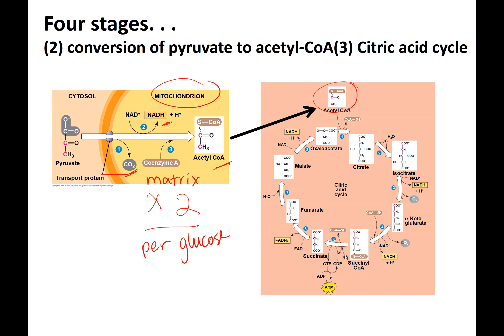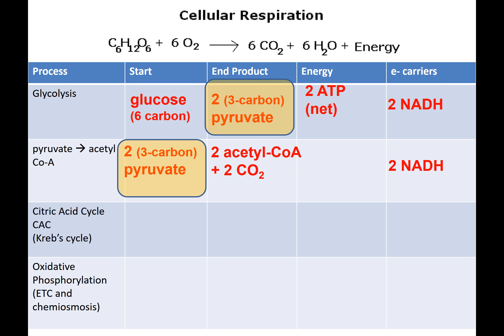Acetyl-CoA feeds right into the next stage, the citric acid cycle. Summarizing this step: pyruvate (from glycolysis) → acetyl-CoA + CO2. CO2 is a waste byproduct that diffuses into your bloodstream and you breathe it out. We also make NADH electron carriers. There is no ATP made at this step.